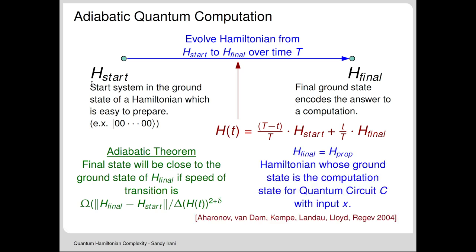H_start is a simple Hamiltonian whose unique ground state is the all-zeros state. H_final is exactly the propagation Hamiltonian we've been discussing, whose ground state is the computational history state. If I can build that, I would know the output of my circuit. So H_final is the H_prop enforcing propagation terms and that the input is X.